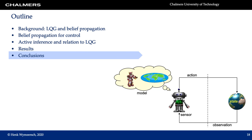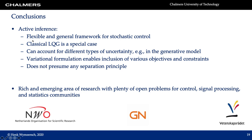In conclusion, active inference is a flexible and general framework that can be applied to stochastic control, and it has classical LQG as a special case provided we define the free energy objective appropriately. Active inference automatically deals with different kinds of uncertainty, including uncertainty in the generative model itself. The variational formulation also allows us to include various kinds of objectives and constraints, and it does not presume any separation principle as in LQG — it naturally emerges. Overall, active inference is a rich and emerging area with lots of open research problems for the control, signal processing, and statistics communities. Thank you for your time and interest in our research.